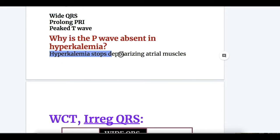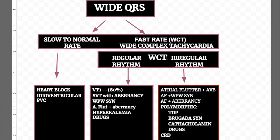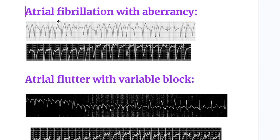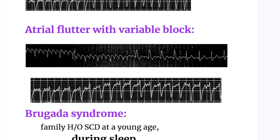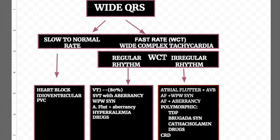Now, wide complex tachycardia with irregular rhythm: atrial fibrillation with aberrancy causes wide complex irregular tachycardia, and atrial flutter with variable block and aberrancy also causes wide complex irregular tachycardia. Others include Torsades de Pointes, Brugada syndrome, catecholaminergic ventricular tachycardia, and drugs that cause QT prolongation.